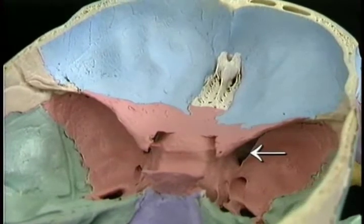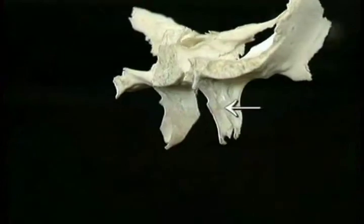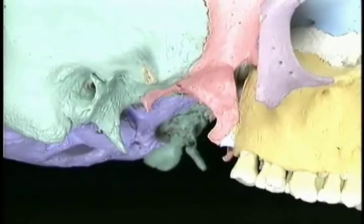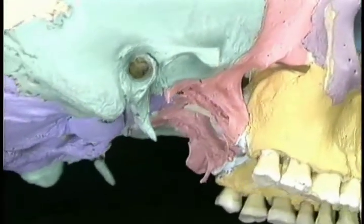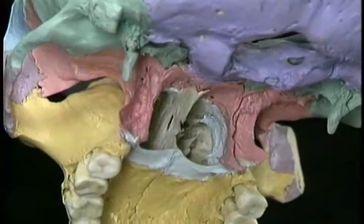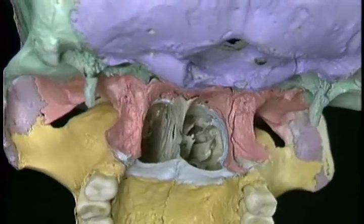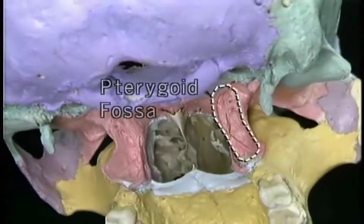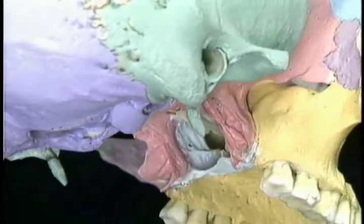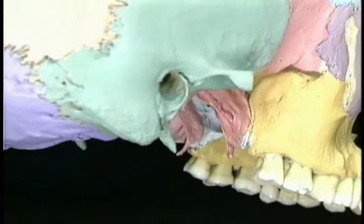Here's the superior orbital fissure from the inside — we'll get a better look at it in a minute. The pterygoid process of the sphenoid bone projects downward behind the maxilla. It includes the lateral and medial pterygoid plates, which are the attachments for some important muscles. The hollow between the pterygoid plates is the pterygoid fossa. This little hook is the pterygoid hamulus — it acts as a pulley, as we'll see later.